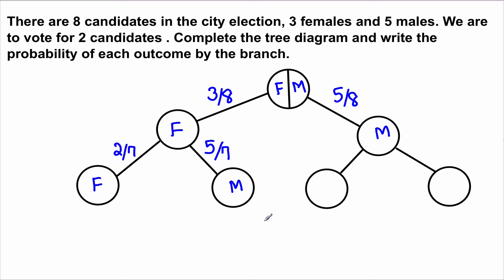If our first candidate was a male and we now select the second candidate — let's say that candidate is female — none of the female candidates have been selected yet, so we still have three females out of seven. But if the second candidate happens to be a male, then the probability of the second one being male would be 4 out of 7, because one of the male candidates is already selected.